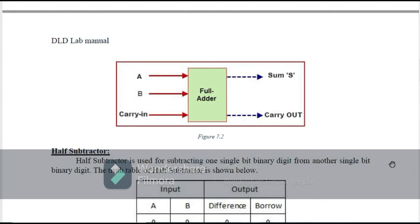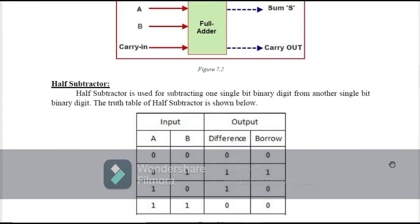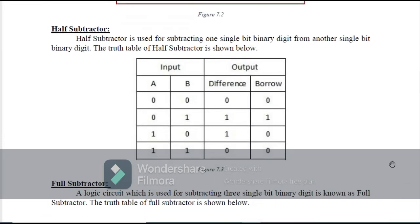After this we have a half subtractor. The half subtractor subtracts two numbers A and B. In the truth table of a half subtractor, we have two inputs. When the input is 0,0 the difference and borrow are both 0. When the input is 0,1 we have to take a borrow, so the difference is 1 and borrow is 1.